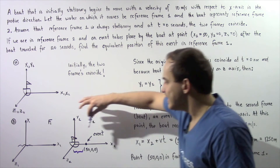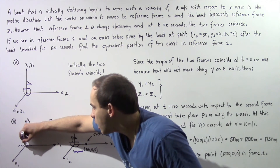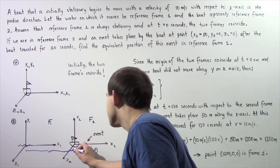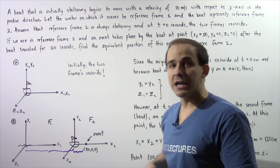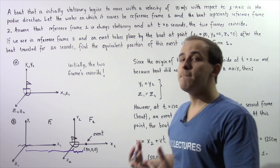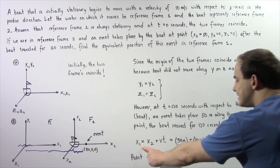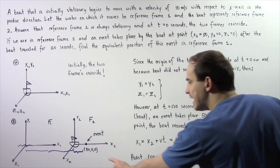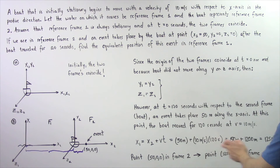What exactly is the distance that the boat actually moved with respect to the origin of frame number one? That distance can be found by taking the velocity of the boat, which is constant at 10 meters per second, and multiplying it by the time of 120 seconds. So the coordinate point x1 is equal to x2 plus v multiplied by T, where x2 is 50 meters, v is 10 meters per second, and time is 120 seconds.